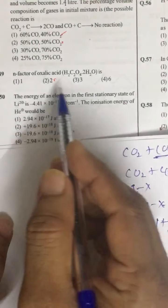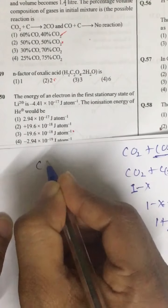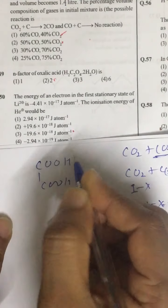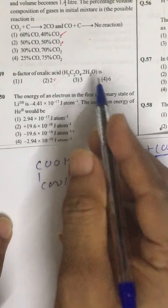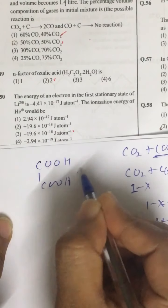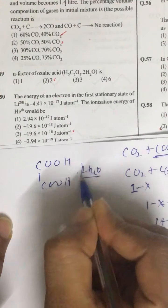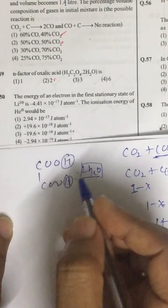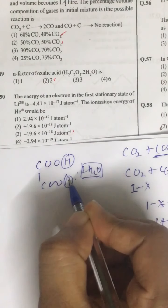Question number 49. n factor of oxalic acid. Oxalic acid is our dibasic acid. So we are not bothered about this twice of H2O. Masses are taken into consideration. But how many replaceable H positive are there? 2. So its valence factor is 2.